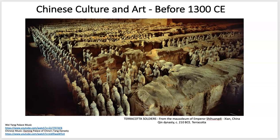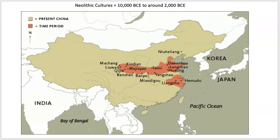We're going to start with the Neolithic cultures of China. You can see here the different cultures during the Neolithic period, which is roughly between 10,000 BCE to around 2000 BCE — those are speculative dates. You can also see the size of present-day China and how much it's grown over about 4,000 years.